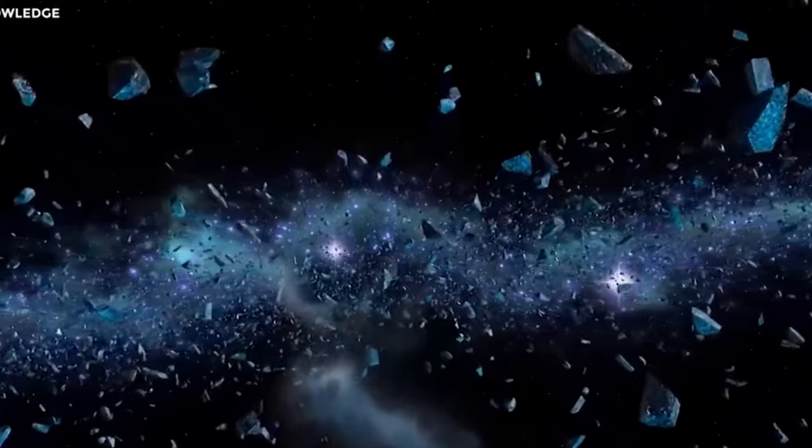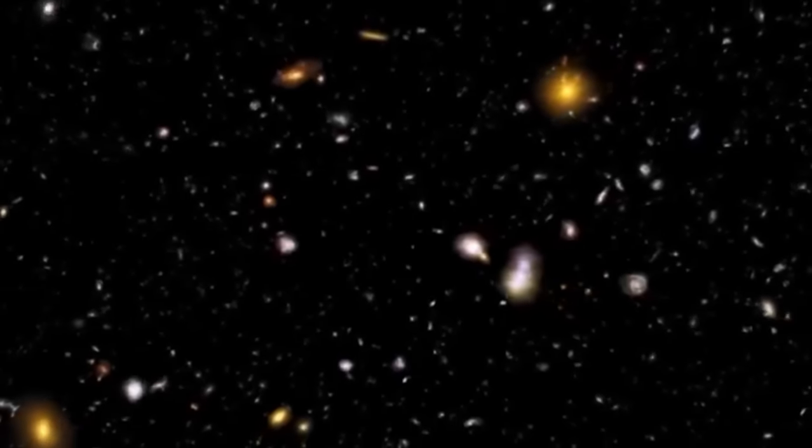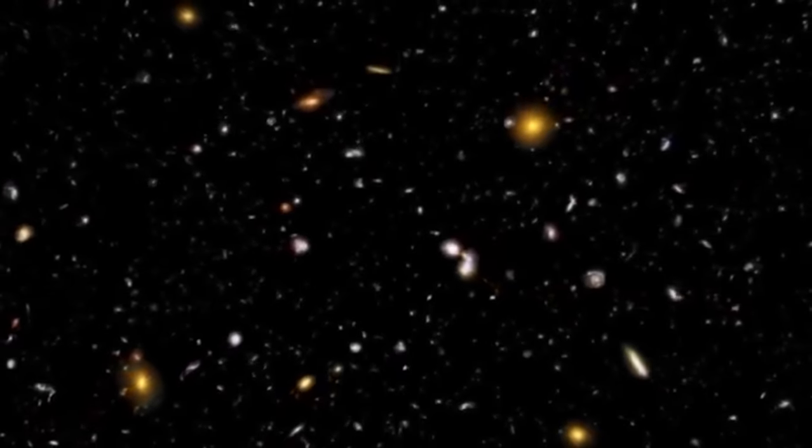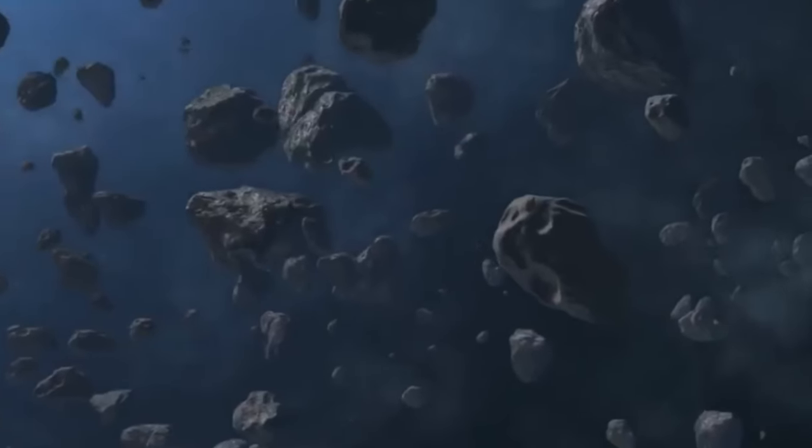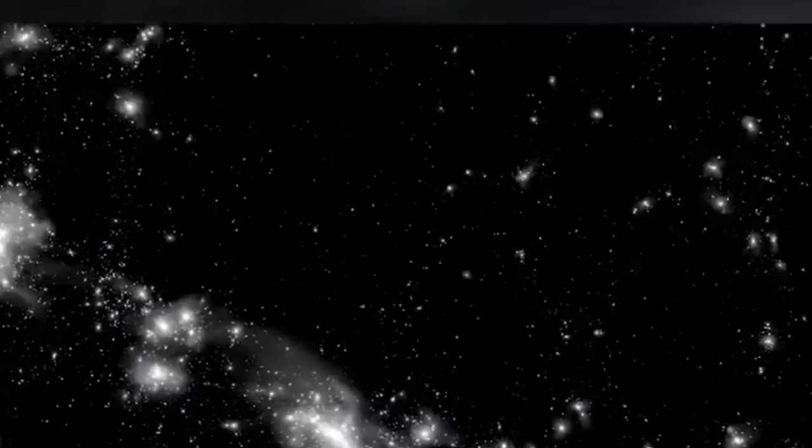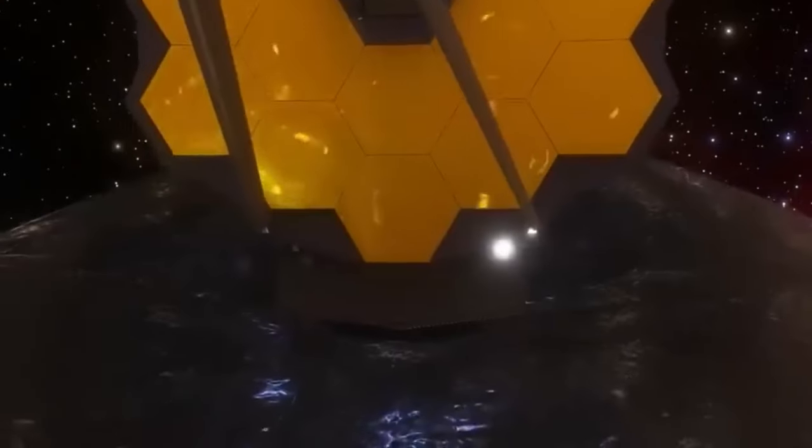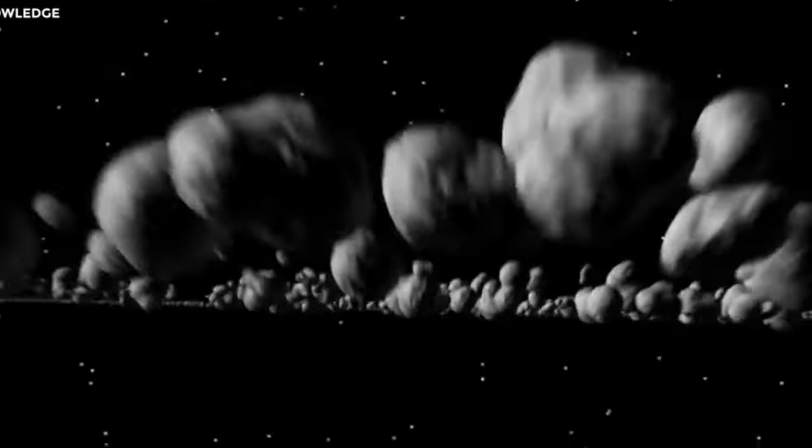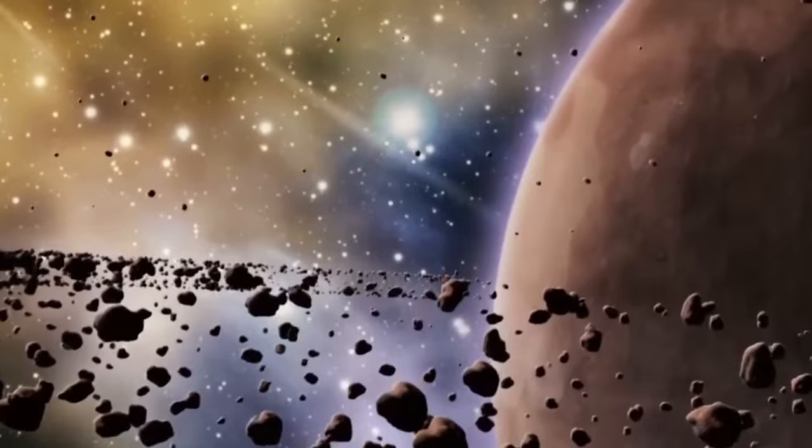This finding underscores the incredible journey that light undertakes across the vast expanse of space, traveling billions of years before reaching us on Earth. It's like receiving a message in a bottle tossed into the cosmic ocean, carrying insights from the universe's distant past. Moreover, this discovery aligns with Albert Einstein's theory of general relativity, which suggests that mass can distort space-time. Massive objects such as galaxy clusters can act as gravitational lenses, bending and magnifying light from objects behind them. This phenomenon, known as gravitational lensing, offers astronomers a unique perspective on the universe.